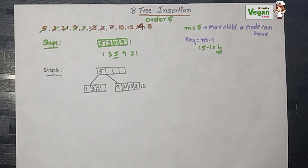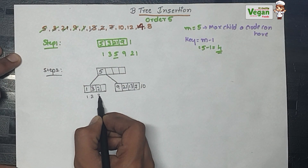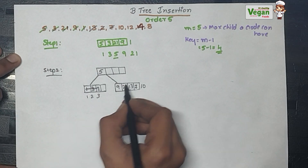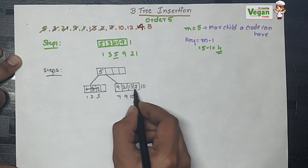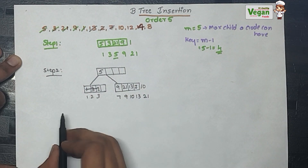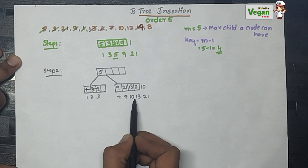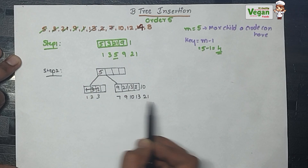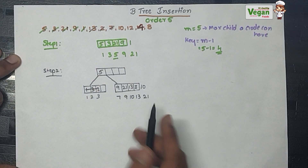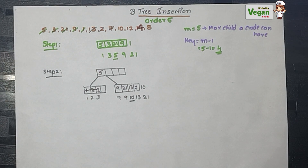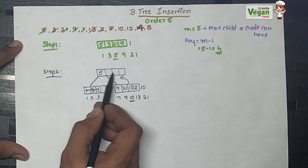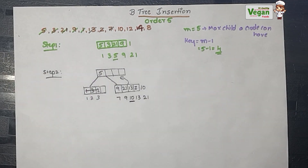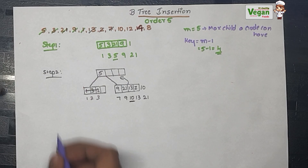This is the fifth element for this node. First arrange the elements in increasing order: on the left, 1, 2, 3; on the right, 7, 9, 10, 13, 21. Find the median — 5 elements, third element selected as median, that is 10. So 10 will be shifted one level up. Since only 5 is at the parent and 3 key spaces are empty, 10 goes there.